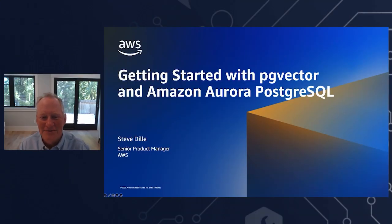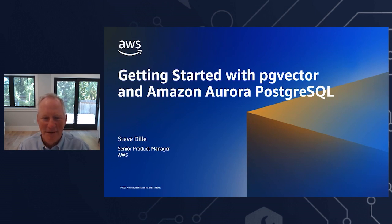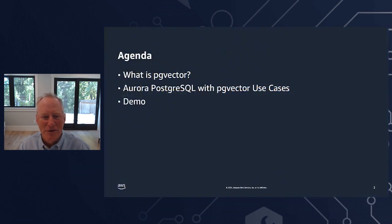Welcome everybody. I'm Steve Dilley, one of the product managers working on the Aurora database at AWS. Today I'm super excited to be talking to you about how PG Vector can help you AI enable your Aurora database. We have a simple agenda: first I'll introduce you to what PG Vector is and how it works under the covers, then I'll cover common PG Vector use cases from customers, and last I'll show a quick demo of semantic search using PG Vector and Aurora.